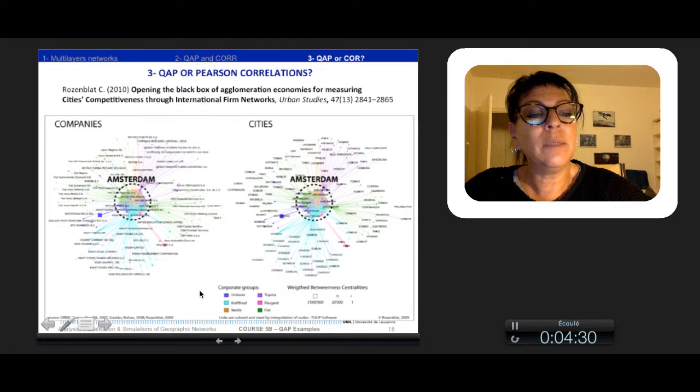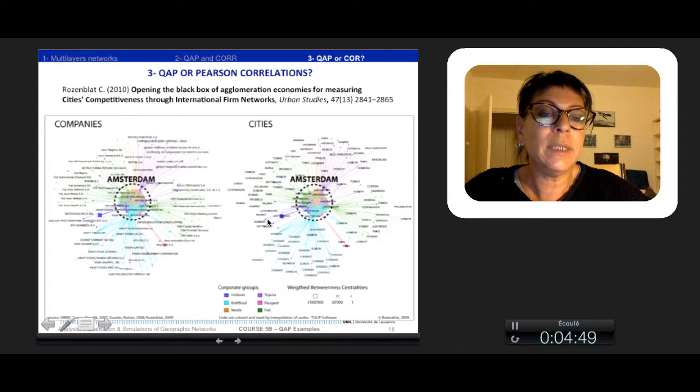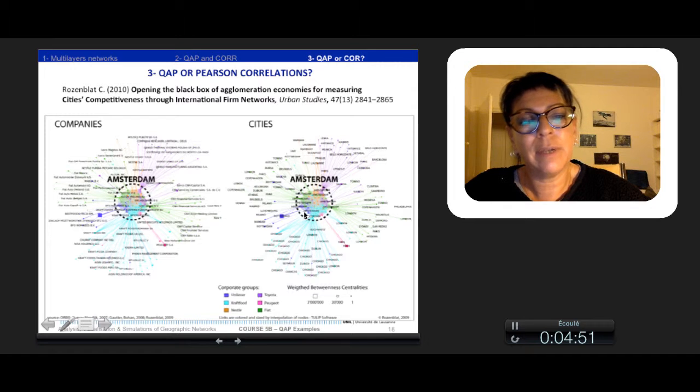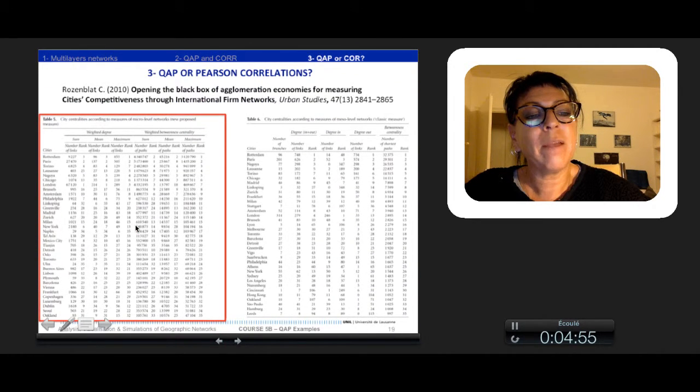As an example here of Amsterdam, we evaluated all the linkages of each firm inside each city, and we calculated a weighted degree and a weighted betweenness centrality for each firm, so for each of these nodes that are in a city. Of course, they have also their proper name.